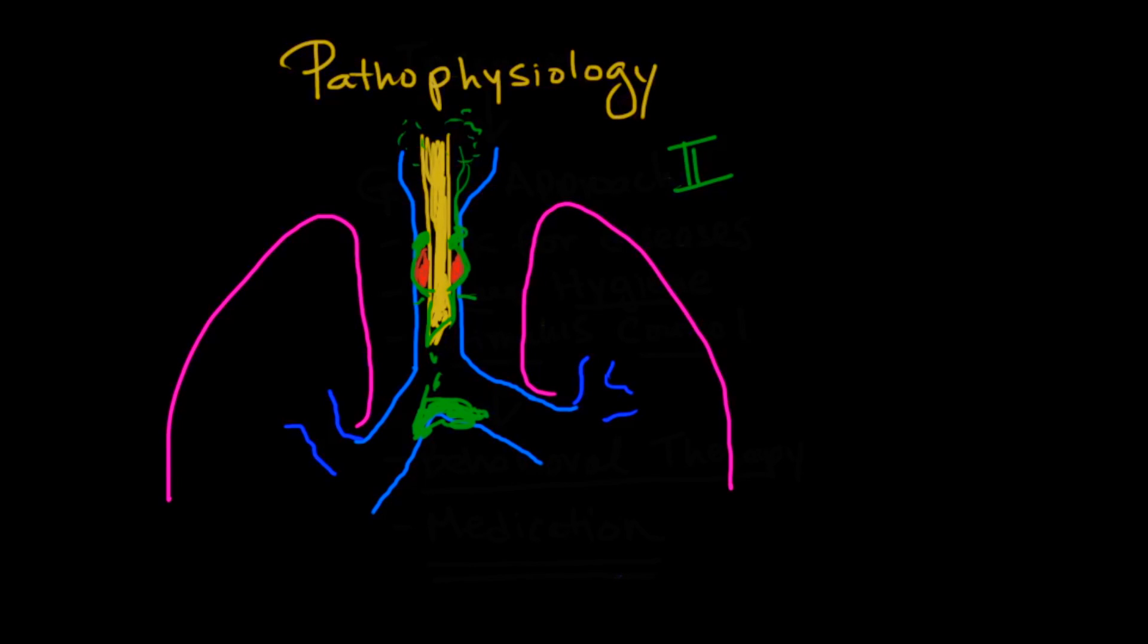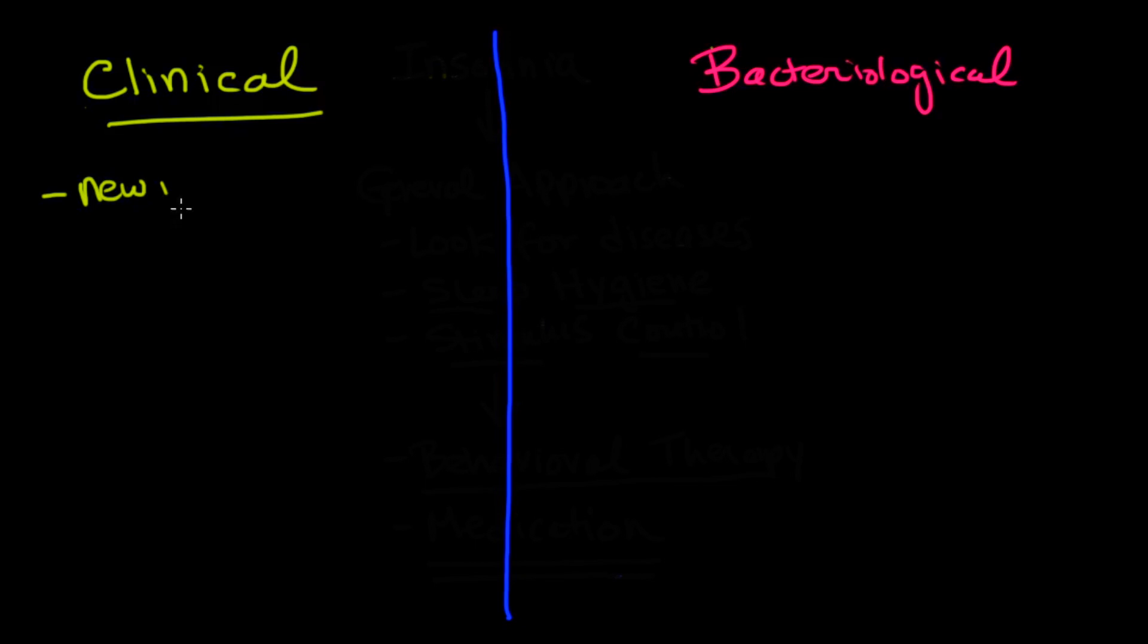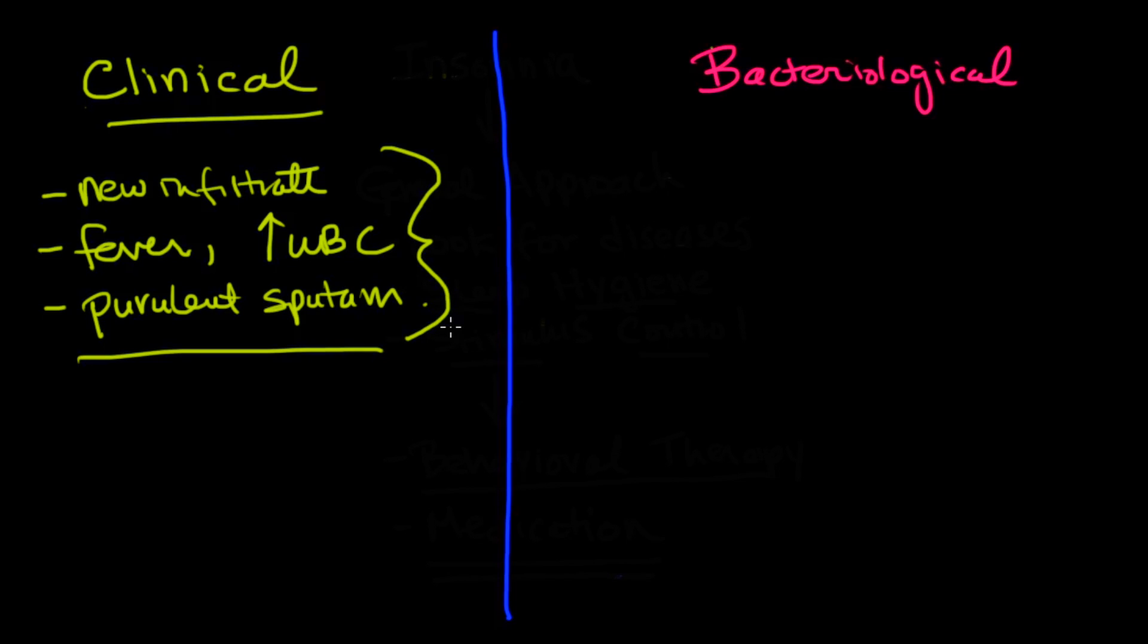Now that we've talked about the epidemiology, the prevalence, the pathophysiology, let's go back to what we were talking about before, which was the actual diagnosis or detection of VAP and our dichotomy between the clinical non-invasive and the bacteriological or invasive. The clinical strategy is quite simple. What you really need is something that has happened to the patient after 48 to 72 hours of intubation. Those things would be a new infiltrate, a fever, an elevated WBC count, and purulent sputum.